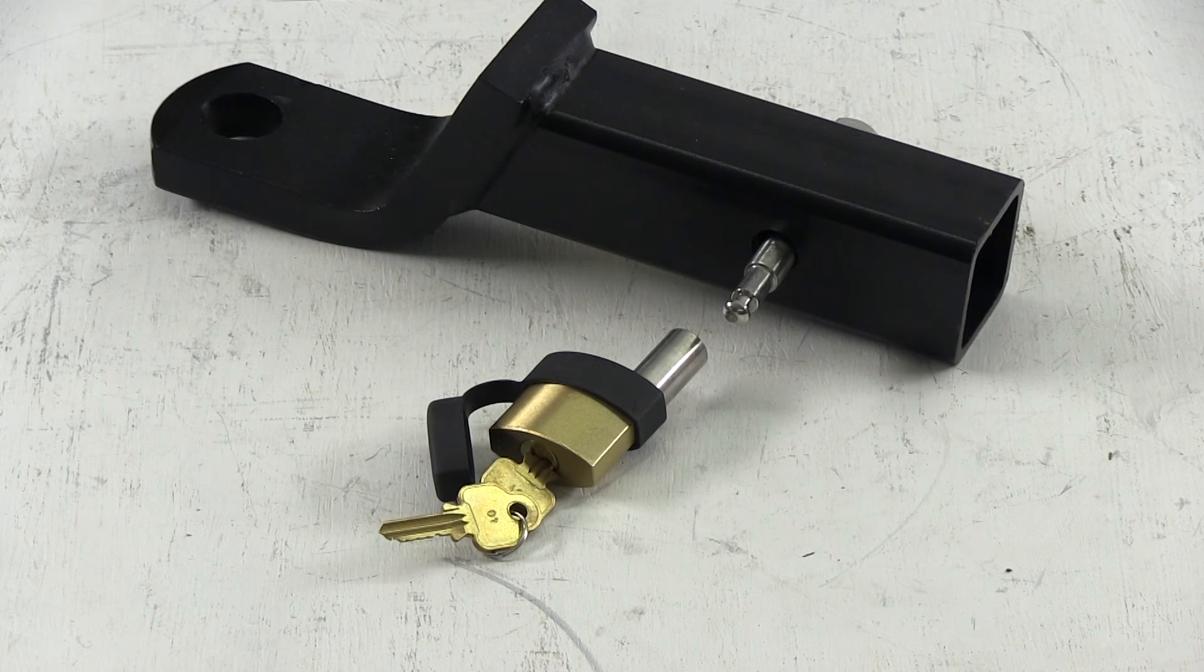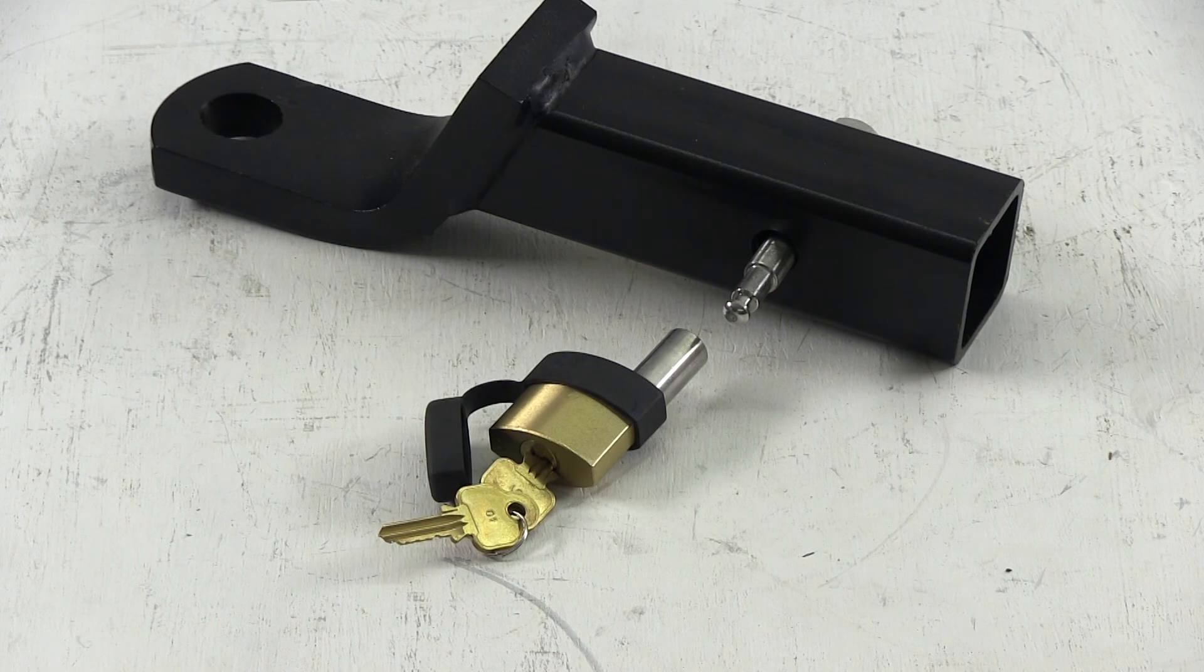And that does it for the SoftRide Stainless Steel Locking Anti-Rattle Threaded Hitch Pin for 2-inch hitches. This is part number SR25219.